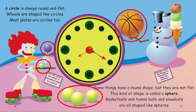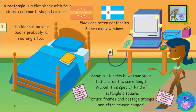A rectangle is a flat shape with four sides and four L-shaped corners. Flags are often rectangles, so are many windows. The blanket on your bed is probably a rectangle too. Can you name the things in this picture that are rectangles?